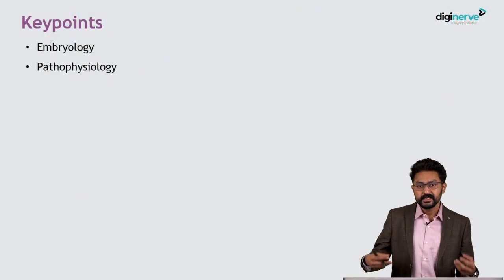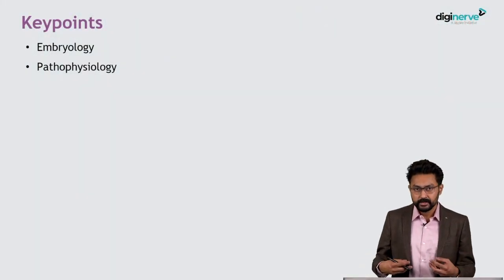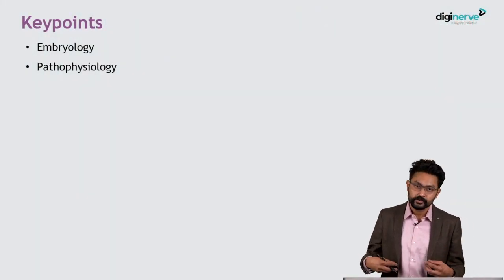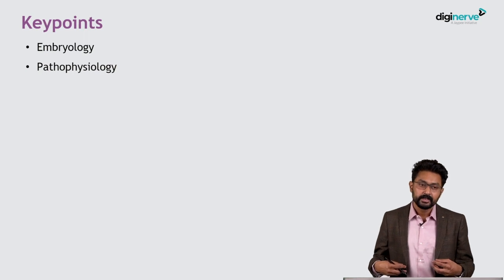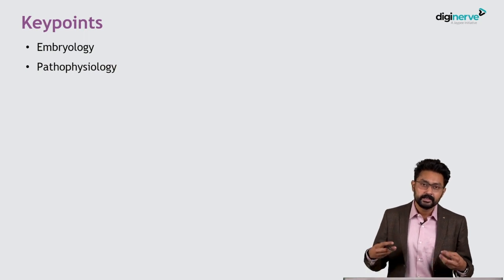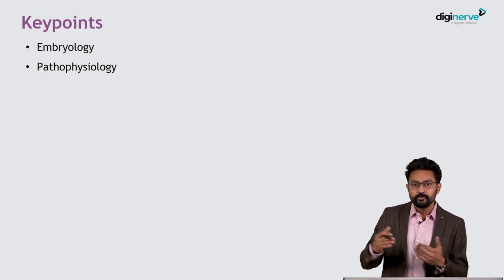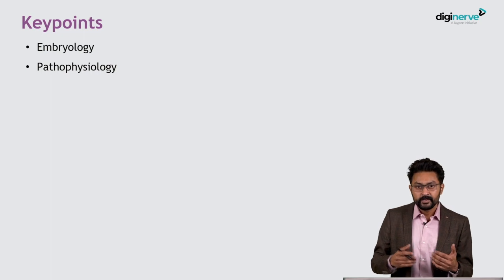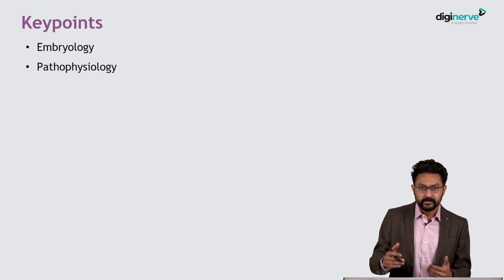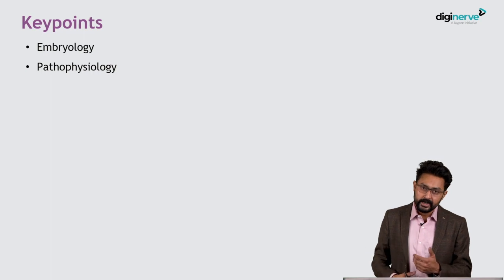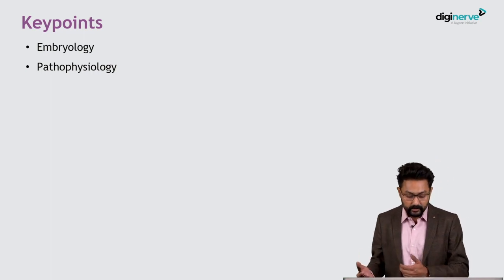The testis develops inside the abdomen in the gonadal ridge, which is in the paramesonephric area. The descent of the testis occurs in two phases: the abdominal phase is controlled by a different pathway, and the inguinal phase is in a different pathway.